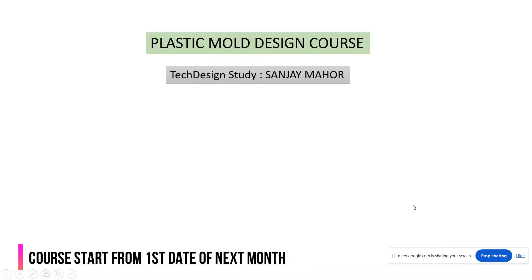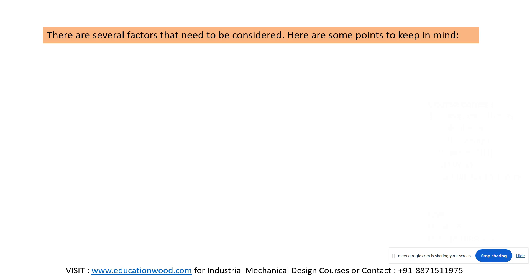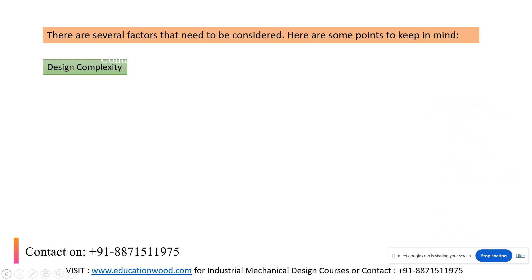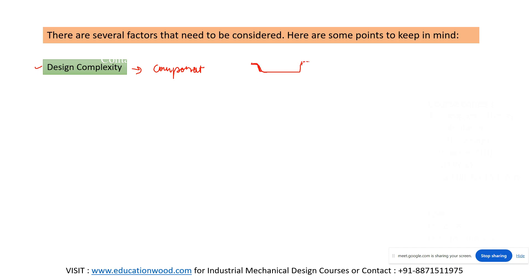Today's lecture is about mold costing — this is a theory lecture. There are several factors that need to be considered. First of all, design complexity. What is the meaning of design complexity? I am talking about the component here. For example, if you have a very easy, simple component, there is no design complexity. For a simple component geometry, we can manufacture this type of cavity by VMC machine.